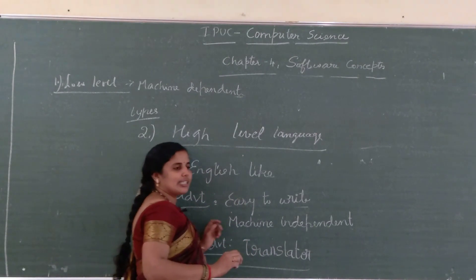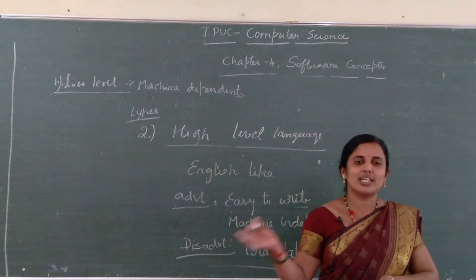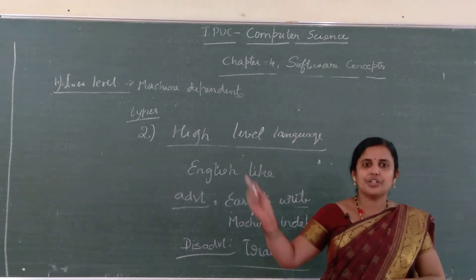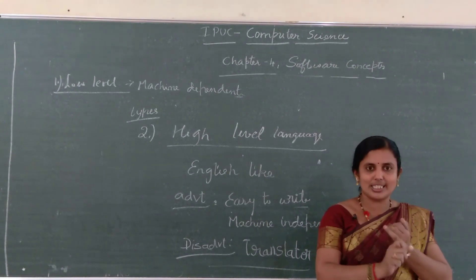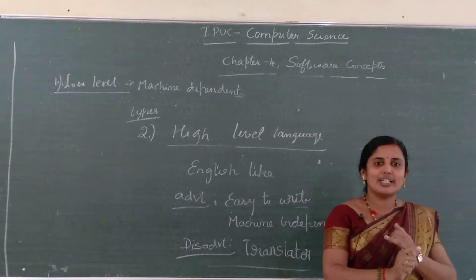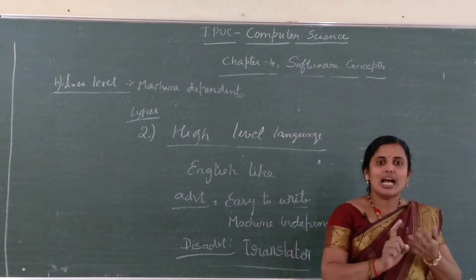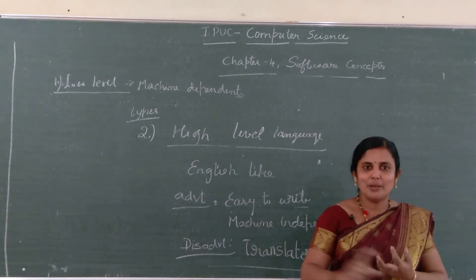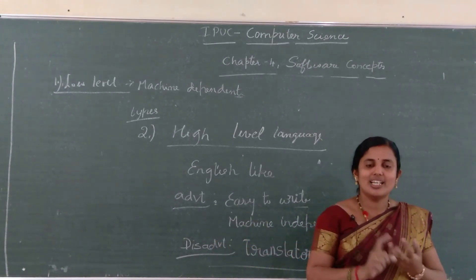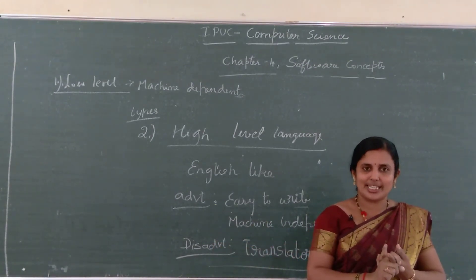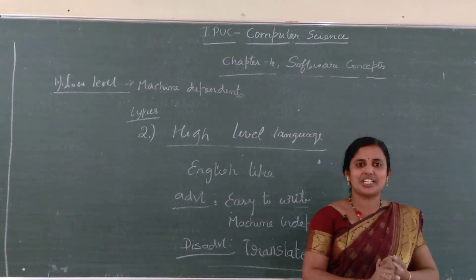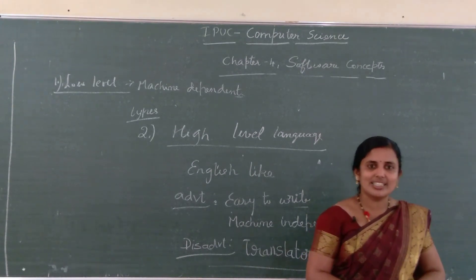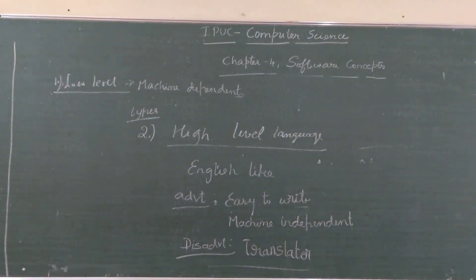The disadvantage of high level language is the same as assembly level: it is not directly understood by the computer. It must be converted into a machine-understandable form — that is, machine level language — so a translator is required. Today we have studied two types of languages: low level language, which includes machine level and assembly level, and high level language, which is written using English-like language. High level language is easy to write and machine independent, but requires a translator. We will continue in the next class. Thank you.